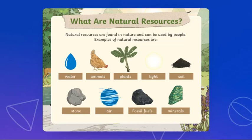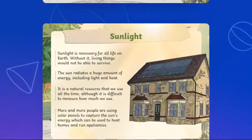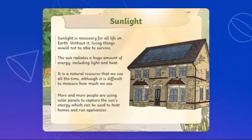We have examples in front of you: water, animals, plants, light, oil, soil, stone, air, fossil fuels, and minerals. Sunlight is one example. What is sunlight? It is necessary for all life on earth — without it, living things would not be able to survive.